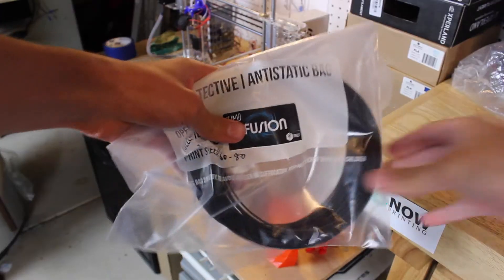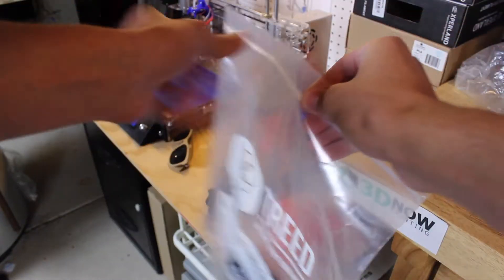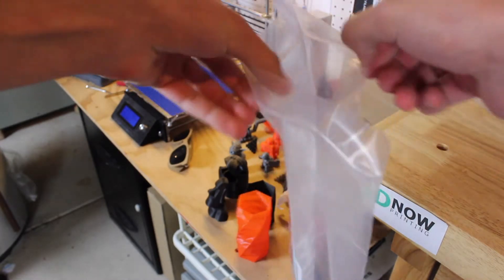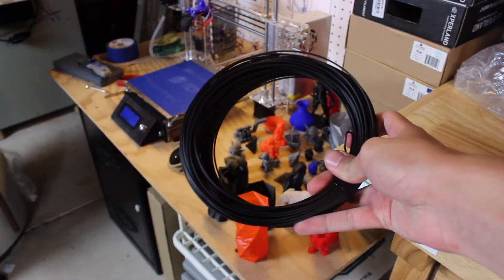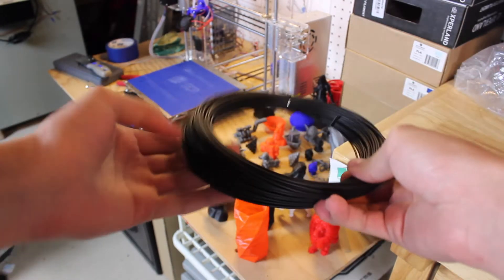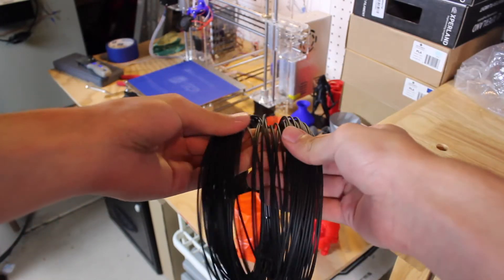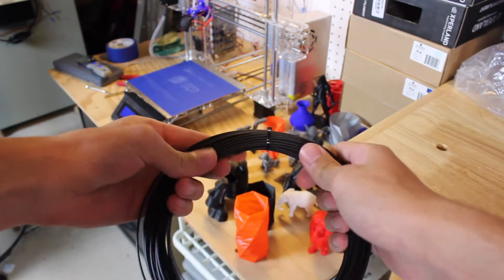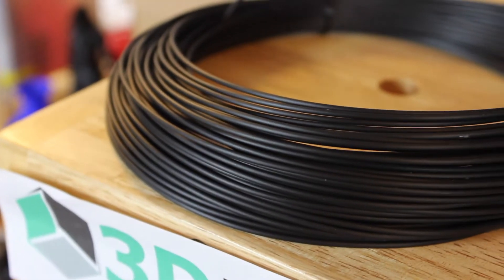Starting out with the Fusion filament, this is a PLA filament so it prints at around 70°C on the bed and actually a higher temperature of 230°C on the nozzle, which means it's also a little bit better heat resistant. You can print this at a pretty high print speed of around 60 to 80 millimeters per second.